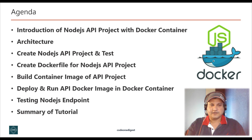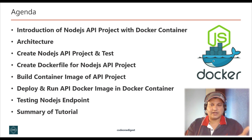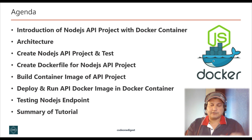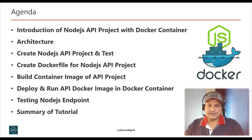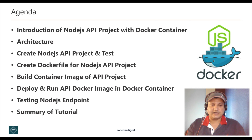Here is the agenda for today's tutorial. I'll give you an introduction of the Node.js JavaScript API project with Docker containers, then explain what we are trying to achieve through an architecture diagram. Then I'll show you the Node.js JavaScript API project and test it. Next, we'll create a Dockerfile and build a Docker image for our Node.js API project. Once the image is created, we'll deploy it into a Docker container and run it. Finally, we'll test the Node.js endpoint and validate that the deployment is successful and the application is running fine in a Docker container.